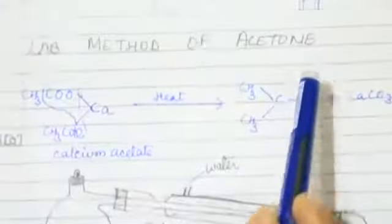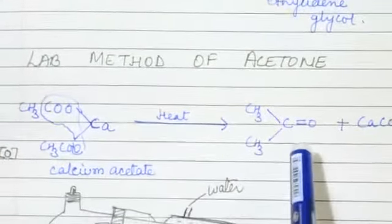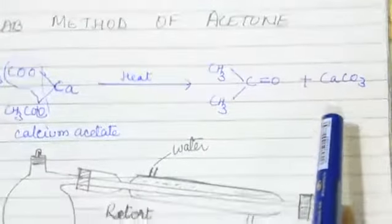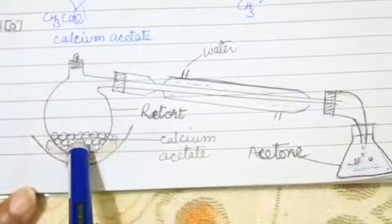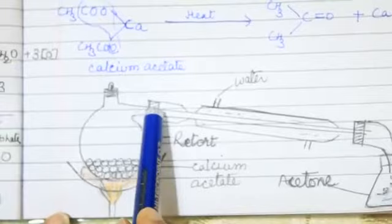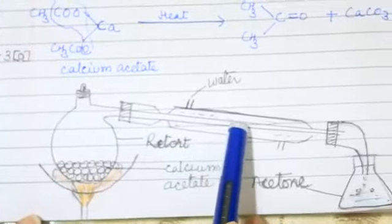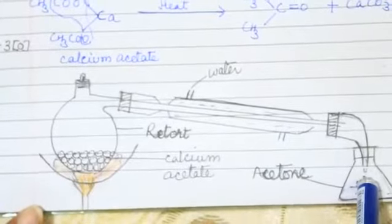Now, lab method of acetone. When calcium acetate is heated, it forms acetone and calcium carbonate. This is retort. When calcium acetate is heated, it forms gas and when it goes to condenser, it changes into liquid and collects in the conical flask.